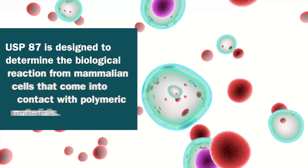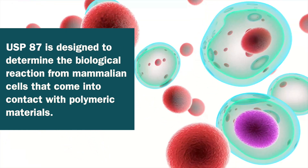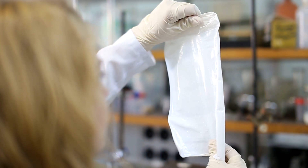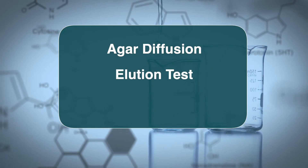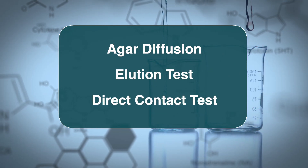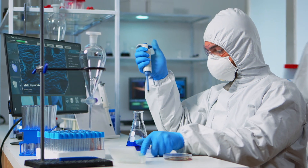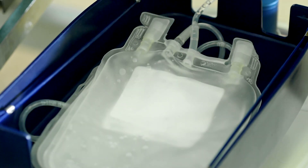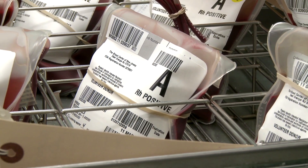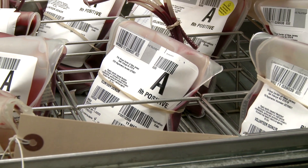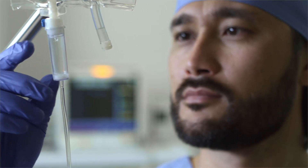USP-87 is designed to determine the biological reaction from mammalian cells that come into contact with polymeric materials. USP-87 uses three distinct test methods: agar diffusion, elution test, and direct contact. The decision as to which type of test depends upon the material, the final product, and its intended use. These uses may include plastics or elastomers used as containers or used to seal containers that will hold drugs or other solutions for intravenous bags, intravenous tubing, or any other plastics that will directly contact the patient.